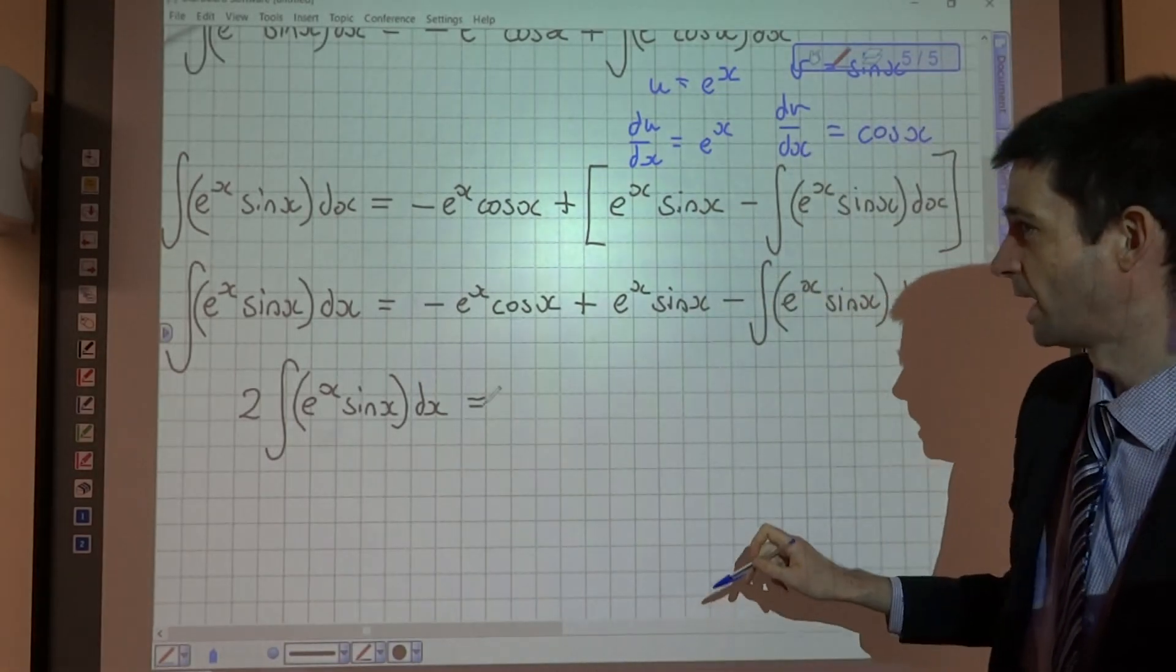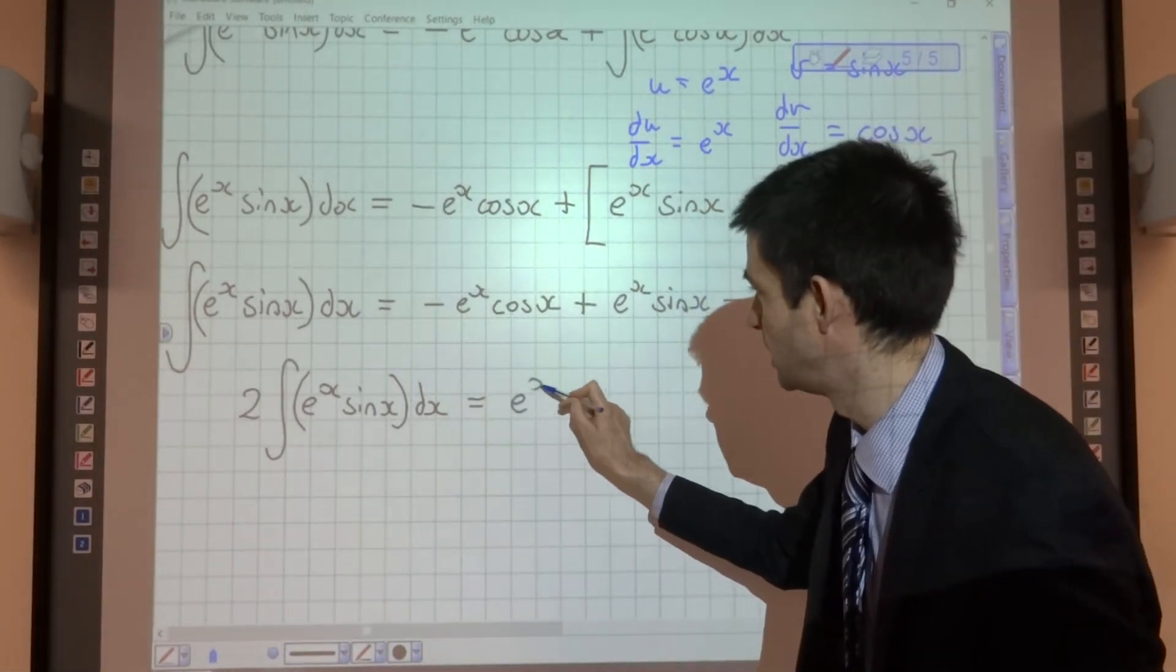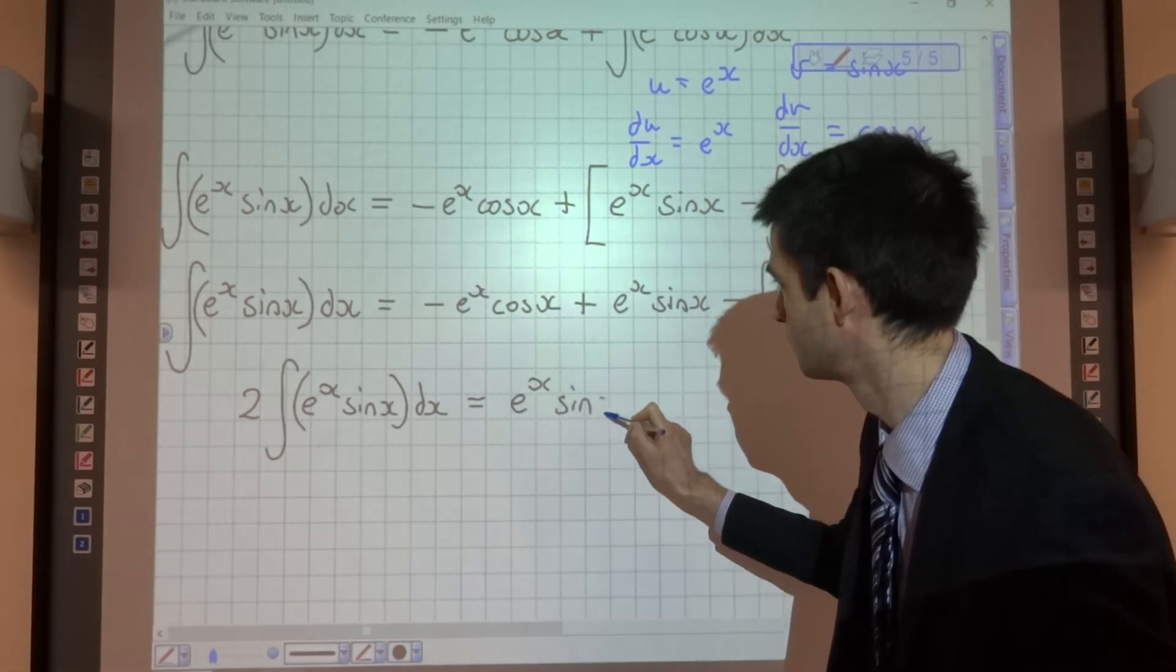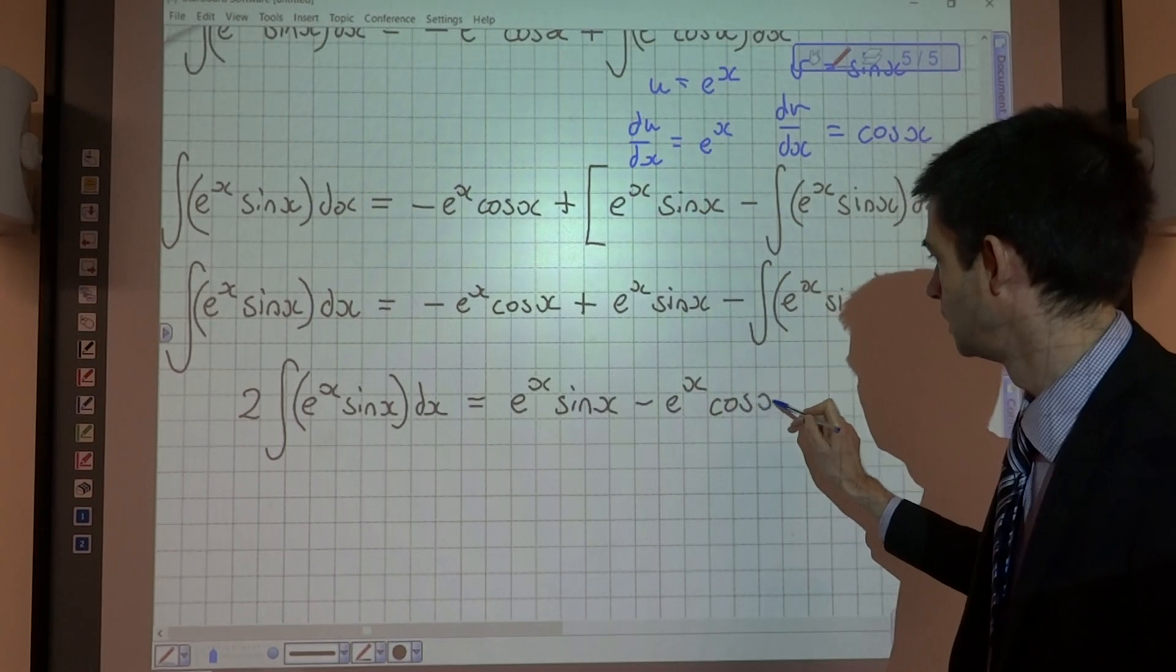And what that would leave us with on the right-hand side, I'm just going to write it the other way around because of the negative, is e to the x sin x minus e to the x cos x.